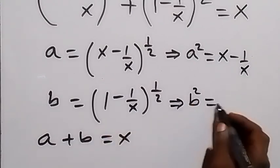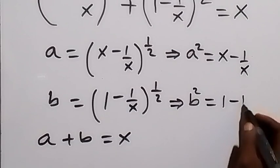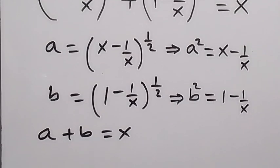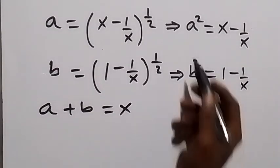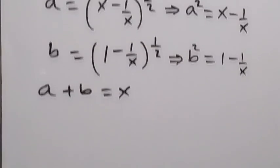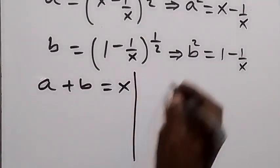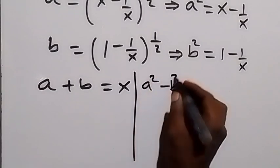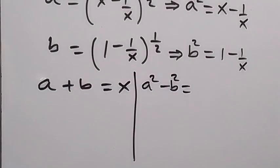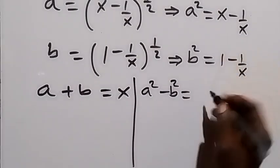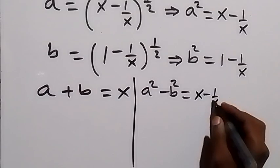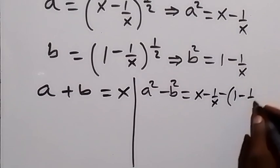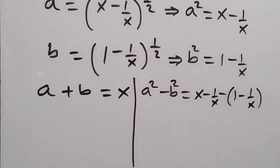From here, let's find a squared minus b squared. On this side we subtract: a squared minus b squared equals (x minus 1 over x) minus (1 minus 1 over x). When we simplify, we open the bracket on the right-hand side.